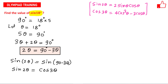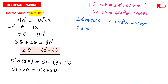Let us plug in these values. On the left-hand side, sin(2θ) becomes 2 sin θ cos θ, and on the right-hand side cos(3θ) becomes 4cos³θ − 3cos θ. Now on the right side we can factor out cos θ, giving cos θ · (4cos²θ − 3). We can then cancel cos θ from both sides because cos θ is not equal to 0.